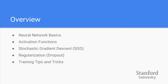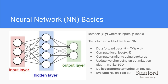Let's cover neural networks quickly, since we also have RNNs and LSTMs to cover. You have a dataset X and labels Y, and want to train a one-hidden-layer neural network. You do a forward pass given by XW plus b, apply a nonlinear activation function, compute the loss, compute gradients via backpropagation, and update weights using an optimization algorithm like SGD. Perform hyperparameter tuning on the dev set, not the test set, then evaluate on the test set.